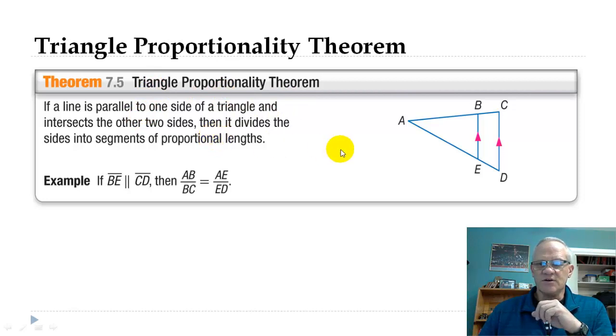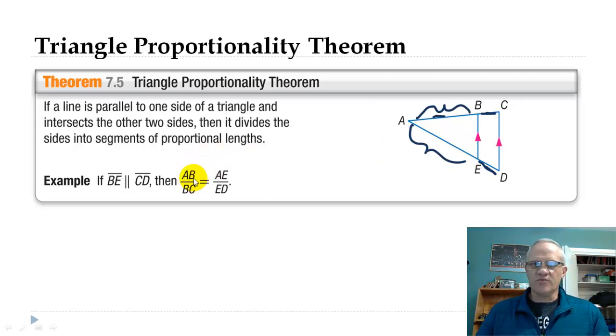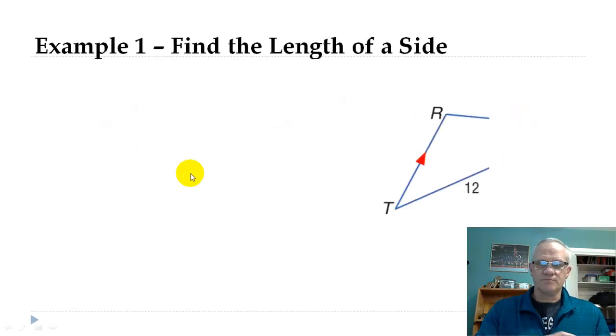So what this triangle proportionality theorem says here is if these two lines are parallel, BE and CD, then what we can make a ratio is not AB over AC, but we can do AB over BC. So you've got this section here over just that little section. And then AE, this whole thing here over just that little part DE. So sometimes that's going to be a lot easier, and hopefully I'll have an example that I'll show you where it's going to be easier.